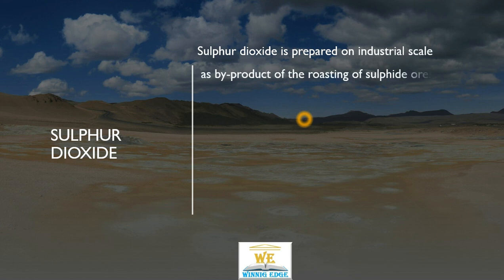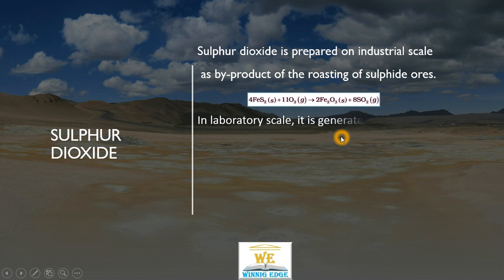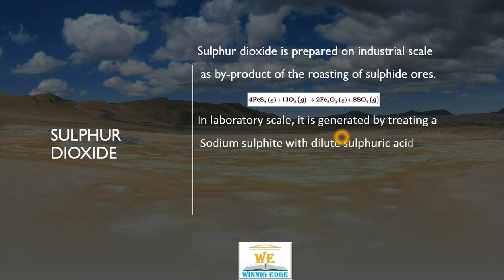Industrially, it is a by-product which we get after roasting Sulphur ores like galena (lead sulphide), zinc sulphide, or copper sulphide ores. Iron sulphide, when we roast it, we get ferric oxide and Sulphur dioxide as a by-product. In lab conditions, sodium sulphite in reaction with sulphuric acid is used for the preparation of Sulphur dioxide.